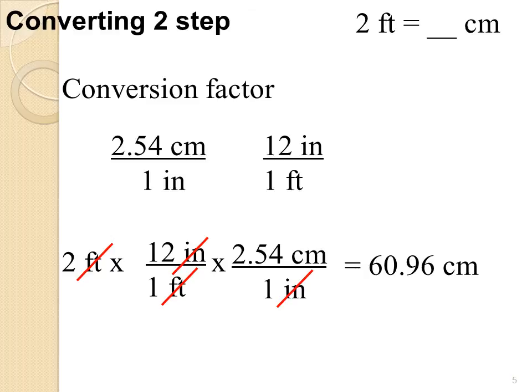The twelve inches over a foot and the two point five four centimeters over an inch, those were both definitions so they're exact numbers. If you remember back from sig figs, that however only has one significant figure. So I need to make this have one significant figure, round to the sixty. It's closer to sixty. So it turns into sixty centimeters.